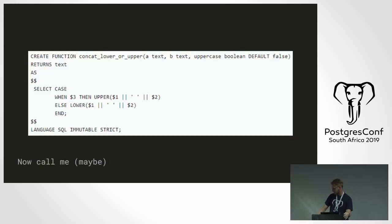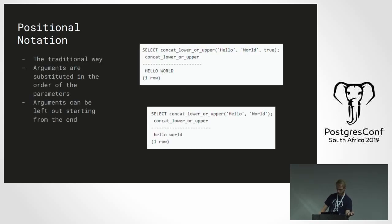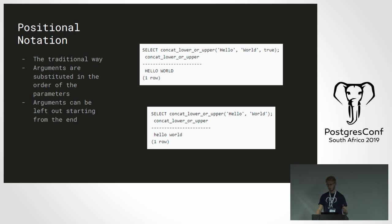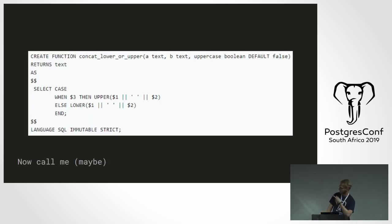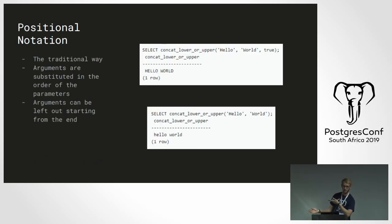Here's an example of a function you can create in Postgres. It basically just takes two strings and a boolean that says whether you want to uppercase both strings or lowercase them both, and it concatenates them. When calling this function, there's a few ways. The first is the positional notation, which is the traditional way — you call the function and pass the parameters in the order they are declared in the function signature. If your function has default parameters, such as the uppercase boolean defaulting to false, you can leave it out and it will use that default value, but you have to start leaving out variables from the end.